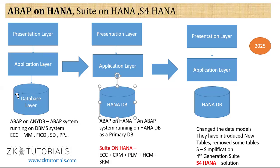SAP replaced whichever database was there and completely replaced it with the HANA database. Simply replacing the database with HANA database makes it Suite on HANA — a solution which companies started buying. Technologically it is called ABAP on HANA technology. But they didn't show a major performance improvement, so they thought of changing the data model.